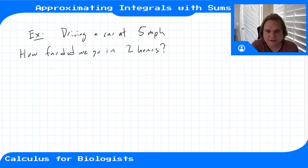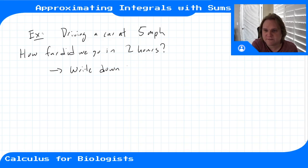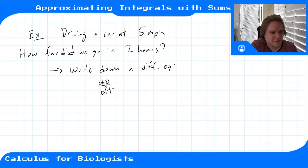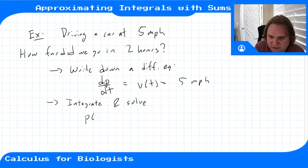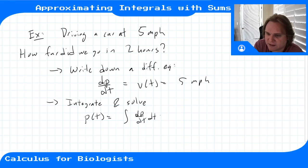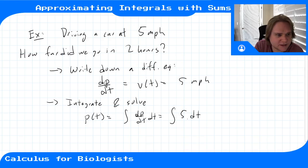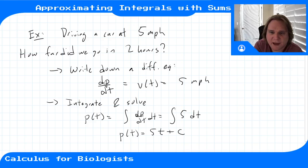We can describe the dynamics by writing down a differential equation. The derivative of position with respect to time is the velocity, which is five miles per hour. We integrate to solve: the position is the integral of the velocity, which is the integral of dp/dt — the integral of five miles per hour with respect to time. That's just a constant slope, so the integral is a linear function: five t plus C.